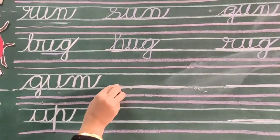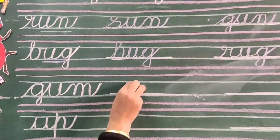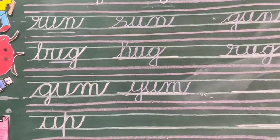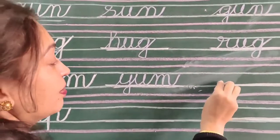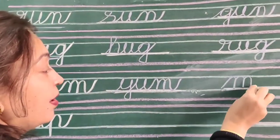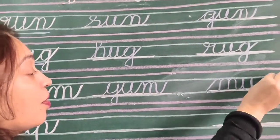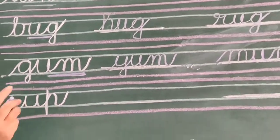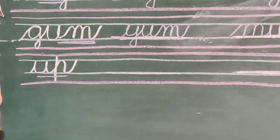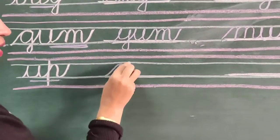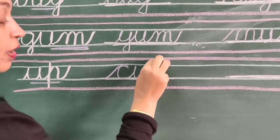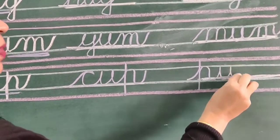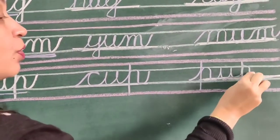G, a, ma, gam. Now we will write Y, a, ma, yum. And M, a, ma, am — mum, mam. Ending sound A, ma, am. A, pa, ap.